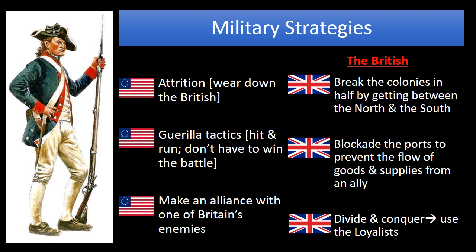Let's look at the military strategies of both sides. The American military strategy was that of attrition — the idea that you were trying to wear down the enemy to get them to give up. The Americans could not stand toe-to-toe with the British, so their only choice was to try to get them to give up the fight. Their second military strategy is known as guerrilla warfare. Washington would use guerrilla tactics like hit and run, with the idea that they don't have to win the battle, they just have to not lose. That gave them a severe advantage in this war.